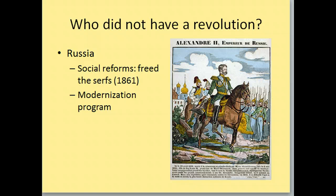England doesn't have a revolution. Russia also doesn't have a revolution because they end up having some social reform — if you reform enough, you can keep people from revolting. In 1861 they free the serfs, which means you are no longer tied to the land; you are now just a peasant and you can move anywhere as long as you can get land. They also have a little modernization program — they start to industrialize and try to come into the 19th century like everybody else in Europe. That's going to help keep people happy, and they're led by their emperor, Alexander II.